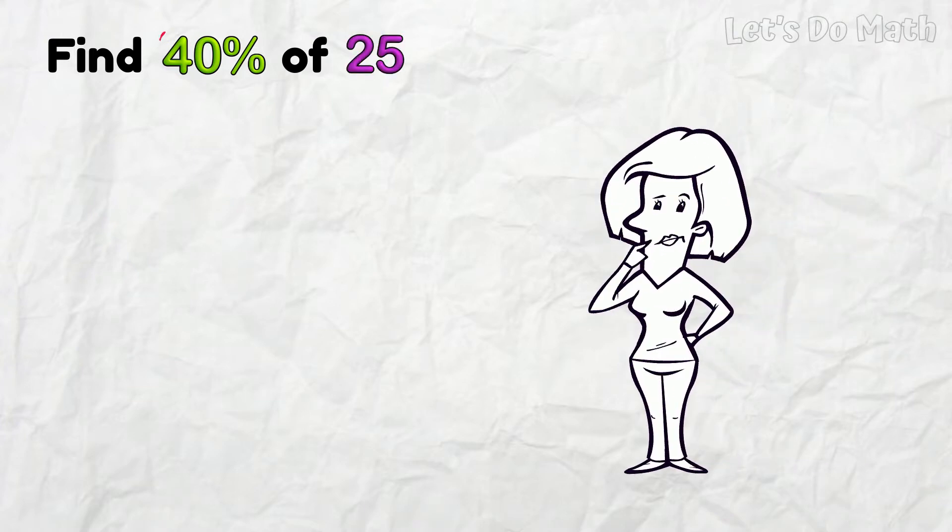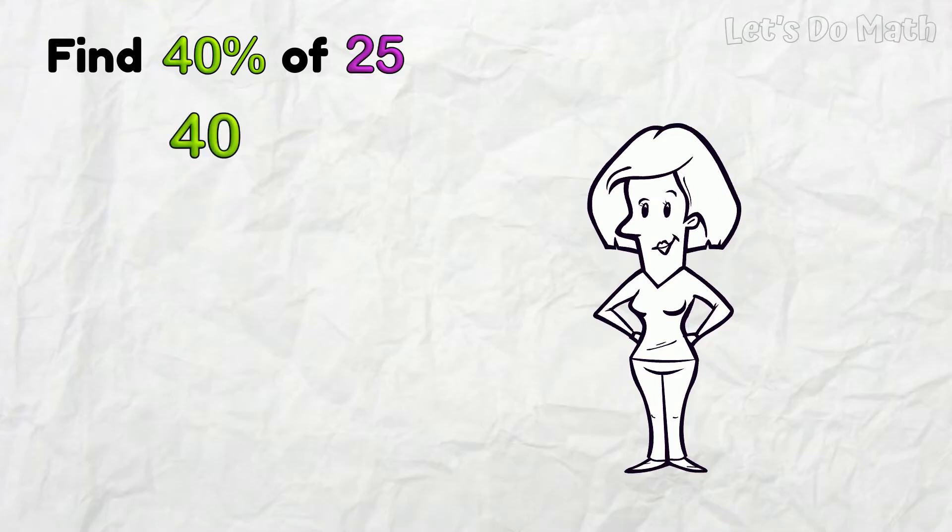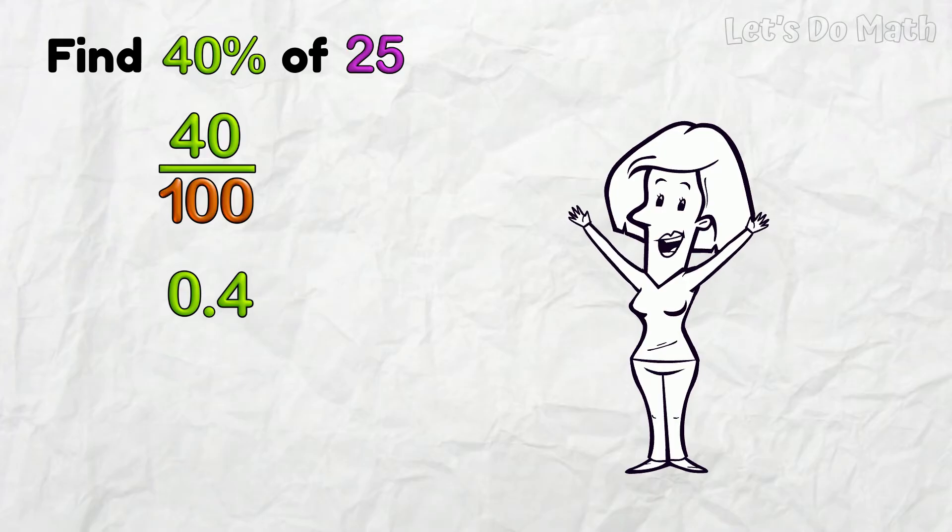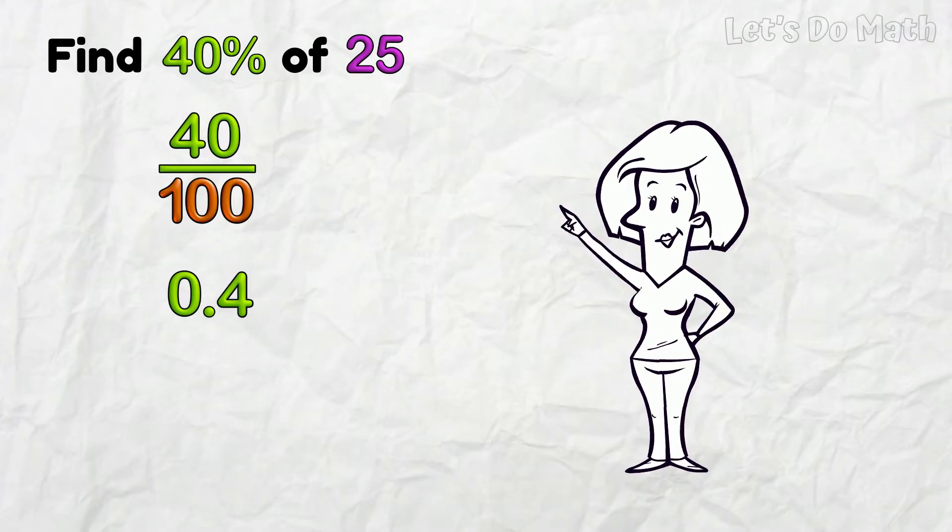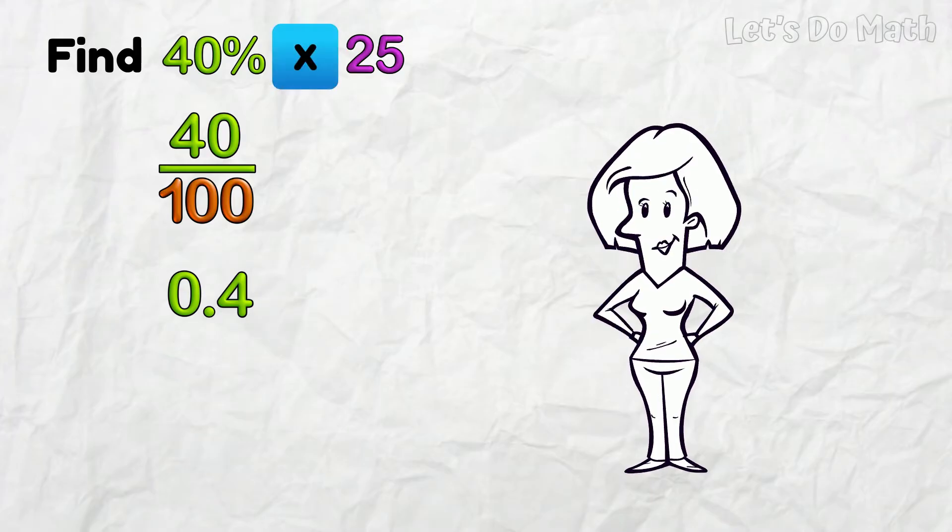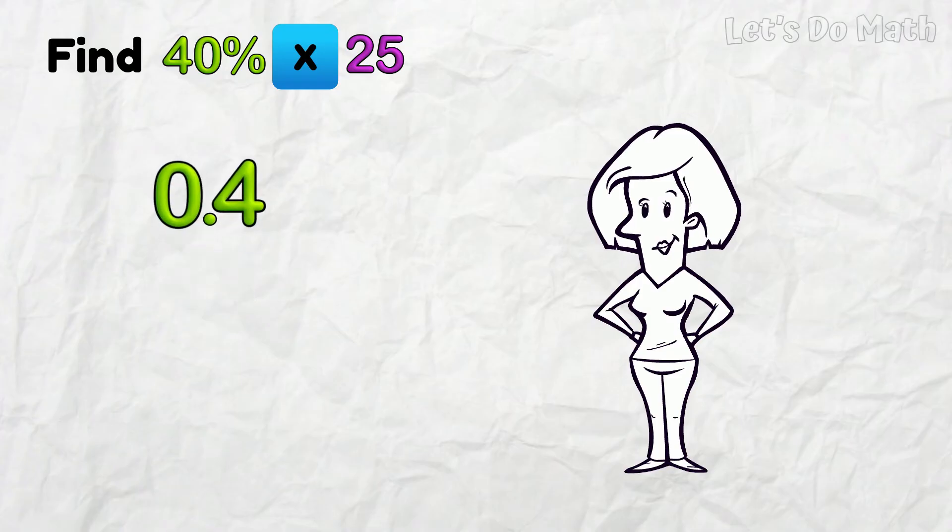You know that 40% means 40 parts out of 100 - there's our fraction. As a decimal, that's 0.40, or even better, just 0.4. We can replace the word OF with TIMES. We are going to solve 0.4 x 25.